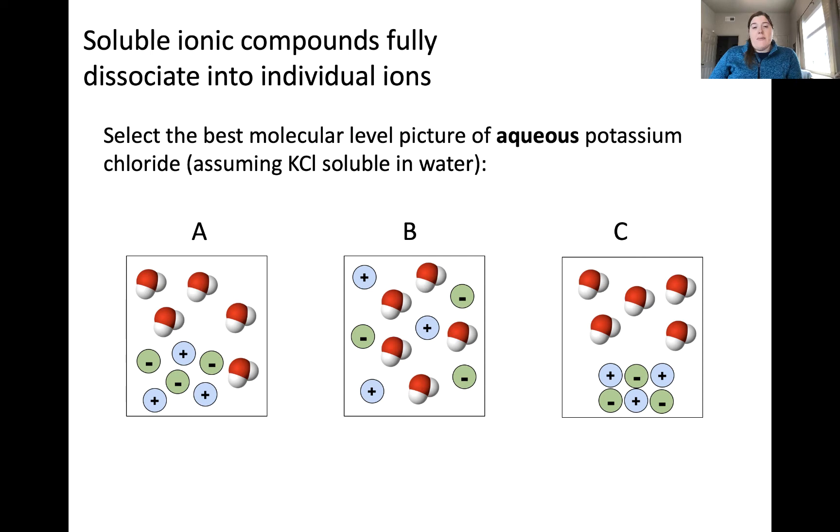So for soluble ionic compounds, these are compounds that will fully dissociate into individual ions. Dissociation is a word that you'll hear a lot in terms of solubility, and what that means is that they will break apart into individual ions.